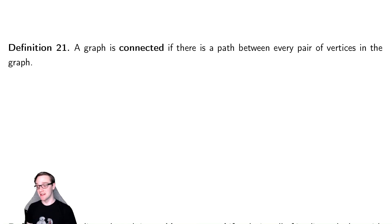Our next definition is about connectedness in a graph. This is another common property. This is as intuitive as you might think. A graph is connected if you can go from any vertex to any other vertex.